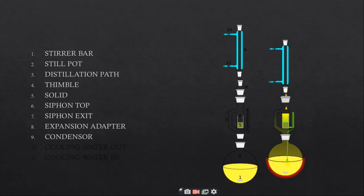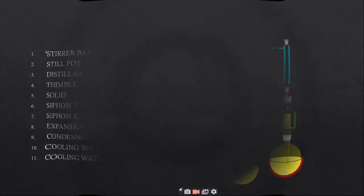Number eight is expansion adapter. Number nine is condenser in which cooling takes place. Number ten shows where water is going out and eleven shows where water is going inside the condenser.